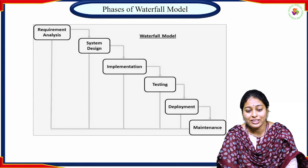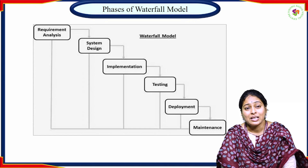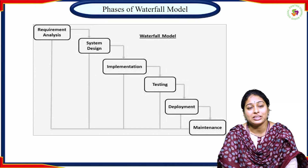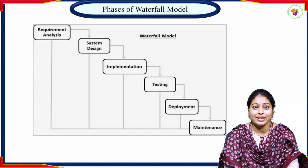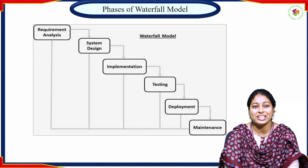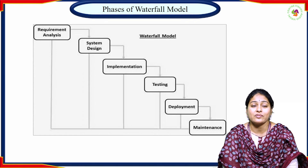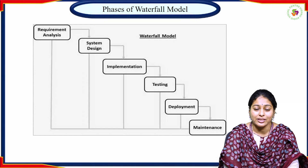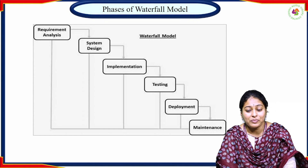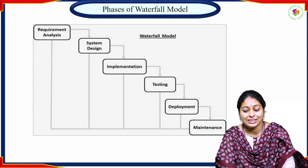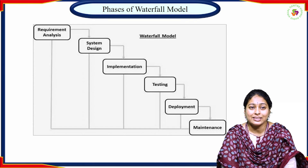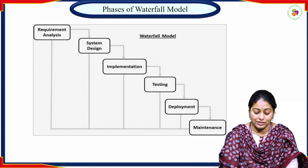This diagram represents the sequence of activities in waterfall model software development. The phases are: first, requirements analysis — but before that, we need to conduct a feasibility study to determine whether to proceed. Then system design, implementation, testing, deployment, and maintenance. Let us discuss each phase one by one.